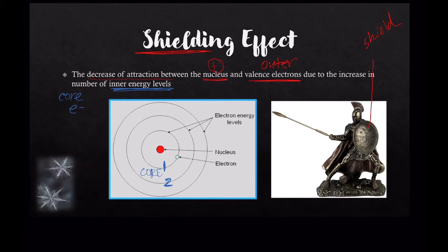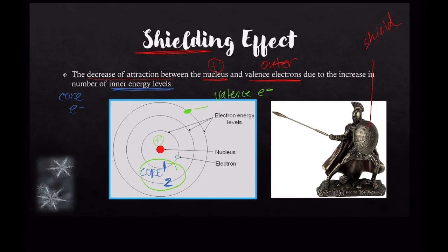With shielding effect, what's happening is the outer electrons — the valence electrons on the outermost energy levels — they are shielded from the nucleus, from the positive attractive force of the nucleus, by the core electrons. So the more core electrons there are, the greater the shielding effect for that atom.